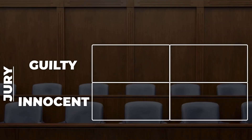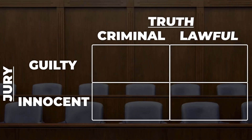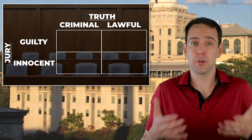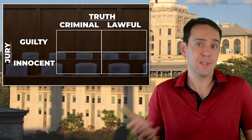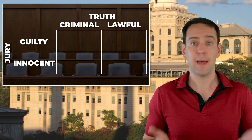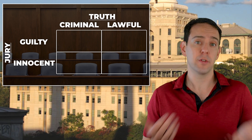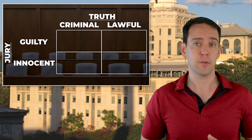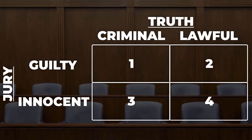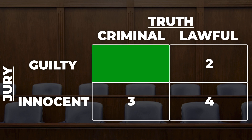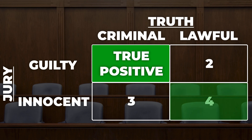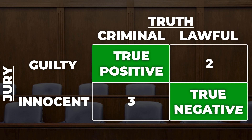On the left I have the outcomes from the jury, and on the top I have the truth. Now, we can't ever know the truth for sure, but in reality the person on trial either did commit the crime or they didn't. That leaves us with four possible situations. Two of them are correct inferences. In this box is the case where the criminal really did commit the crime and the jury believed so as well — we call that a true positive. And in this box, the criminal really didn't commit the crime and the jury again believed so as well — we call that a true negative.